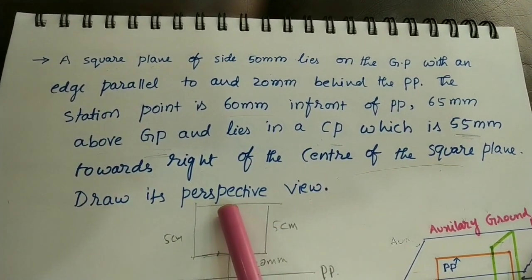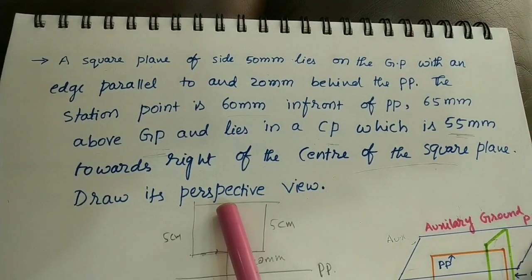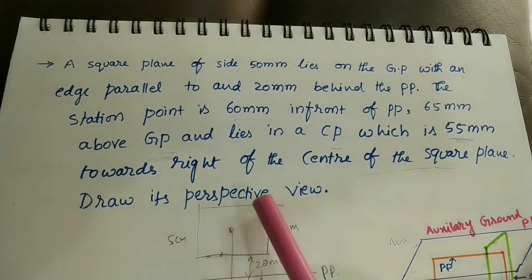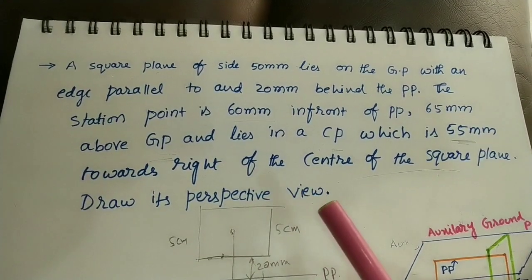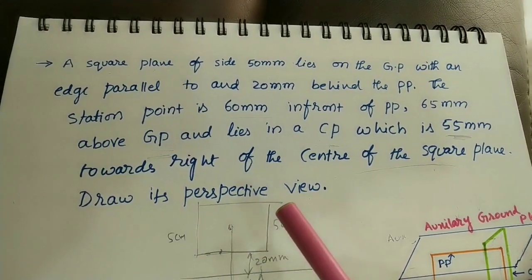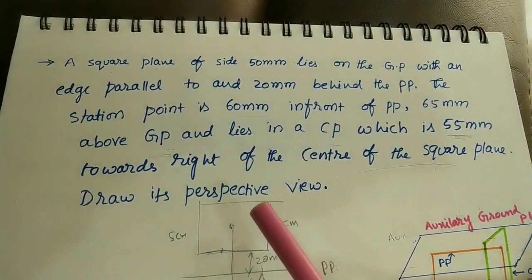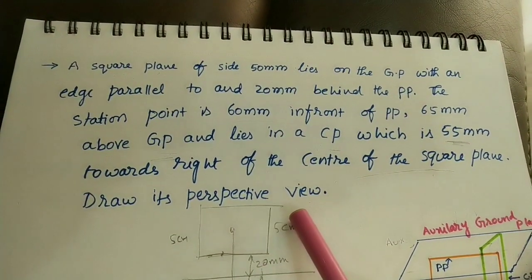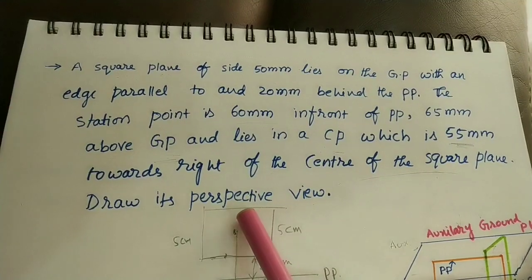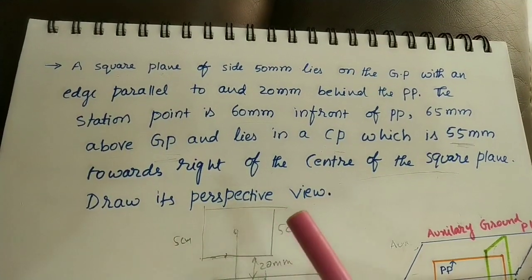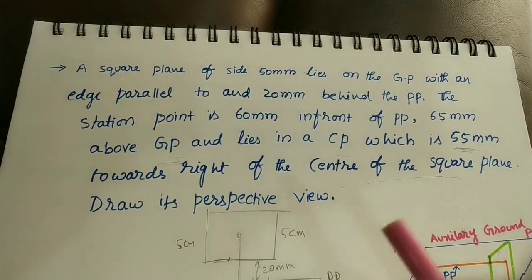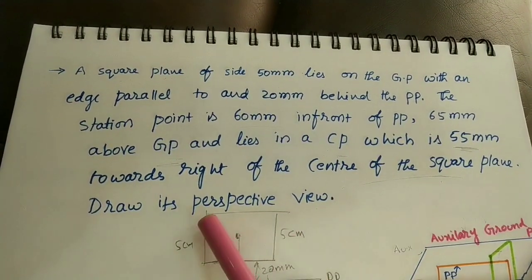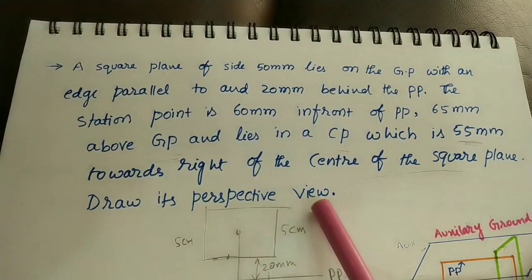Perspective view means a 3-dimensional diagram. Whatever we are seeing — any object — that 3D view which is coming is called perspective view. Or we can say, whatever image we are taking from a camera, that image is also called perspective view.